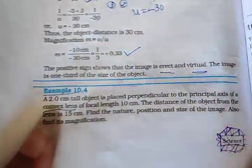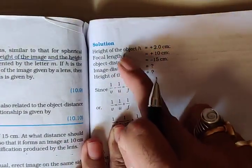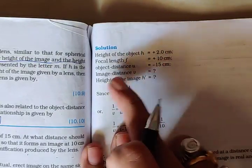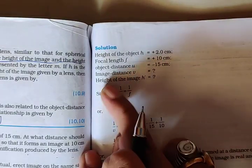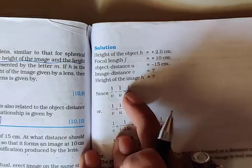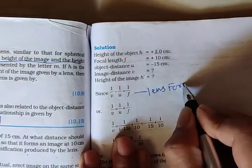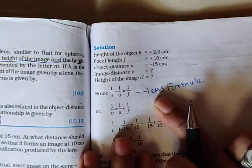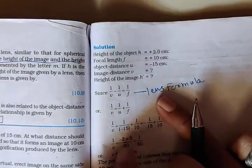Do not panic when they ask more than two or three things. Just collect the basic information: height of object h = plus 2 cm, focal length f = plus 10 cm, object distance u = minus 15 cm. Image distance v is to be found, as is height of image h-dash. Apply the lens formula: 1/v = 1/u + 1/f.